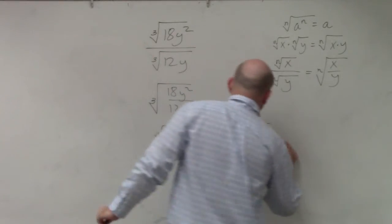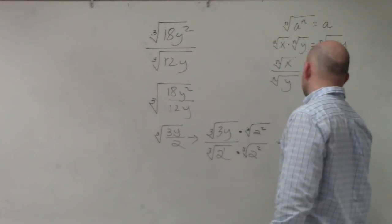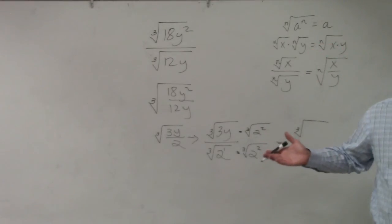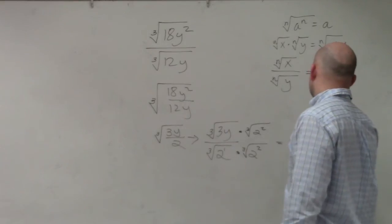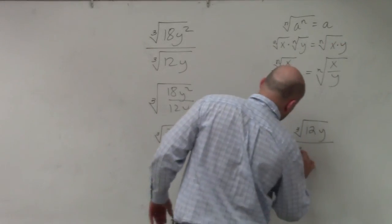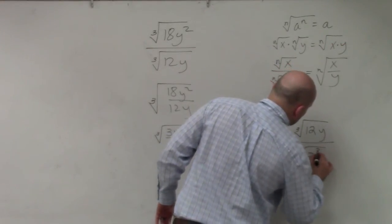So now, by doing that, I get the cube root. Really, 2 squared is 4, correct? So 4 times 3 is 12y over this becomes the cube root of 2 cubed.